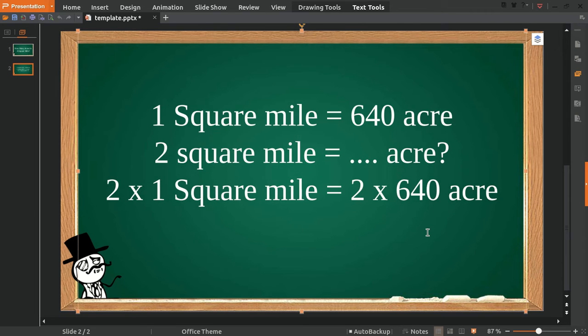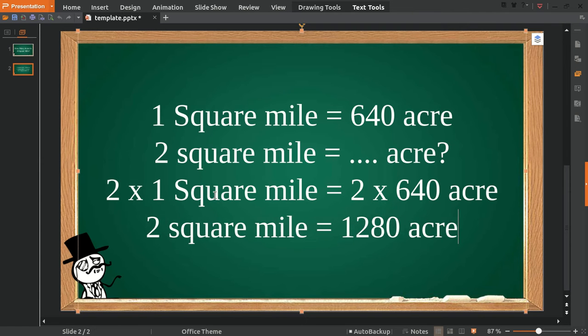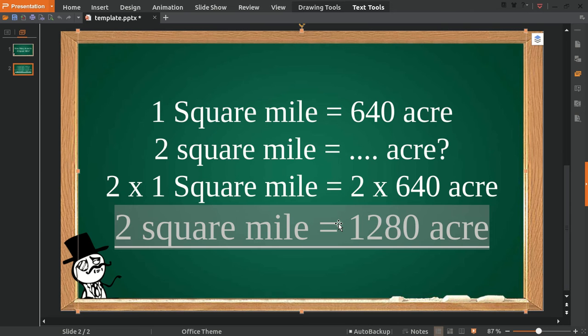Now, two square miles is equal to 1,280 acres. Okay, that's the answer. Thank you for watching. Don't forget to subscribe to this video and goodbye.